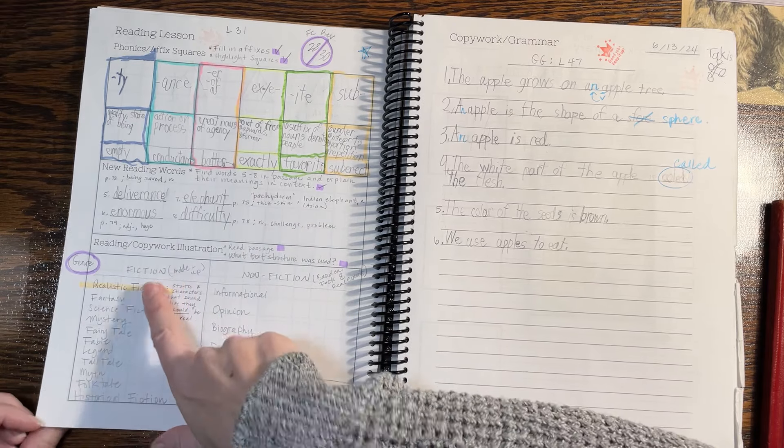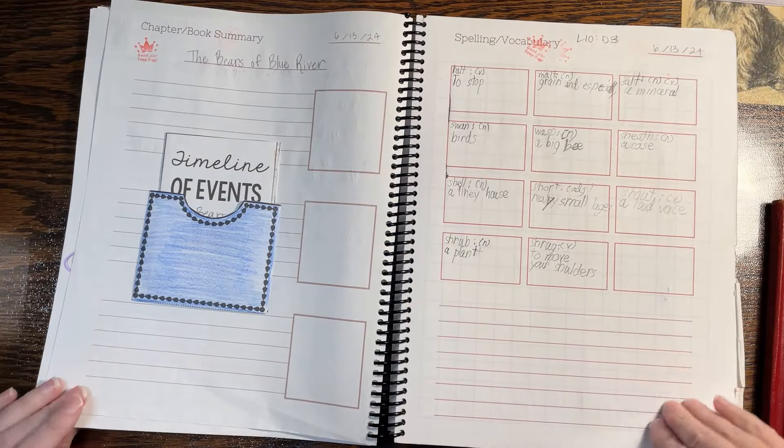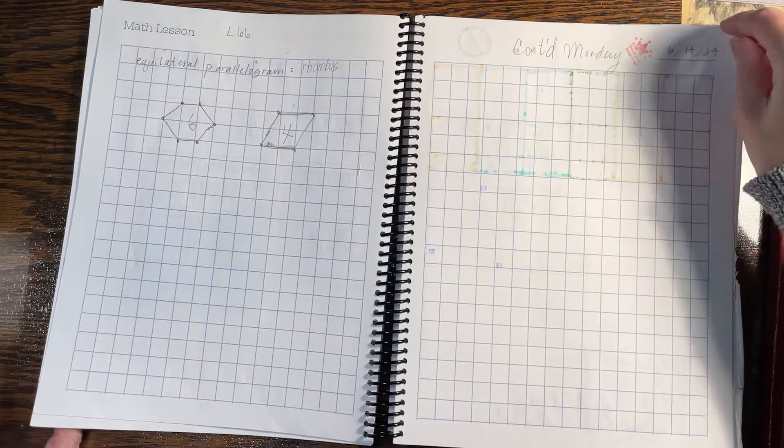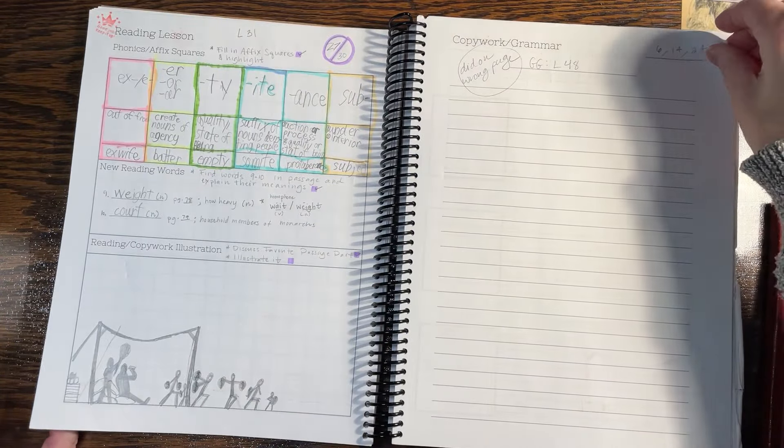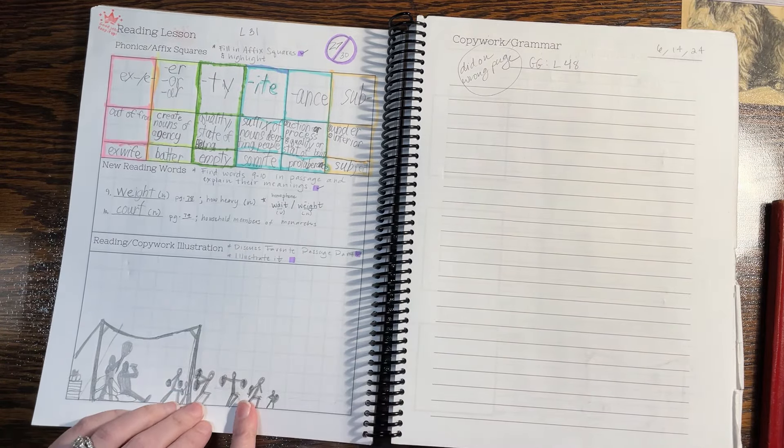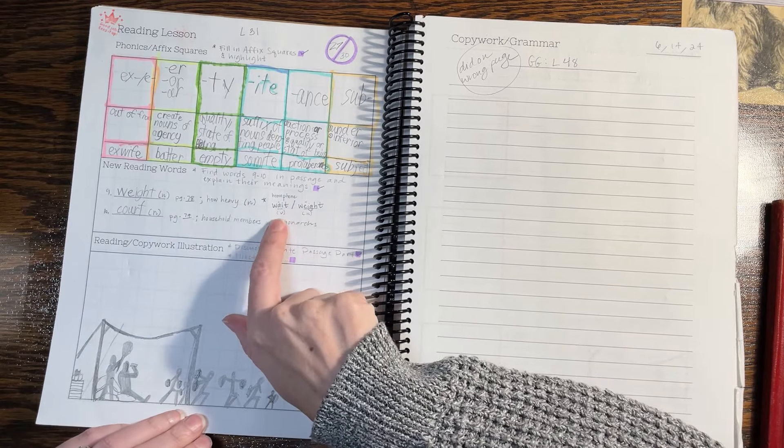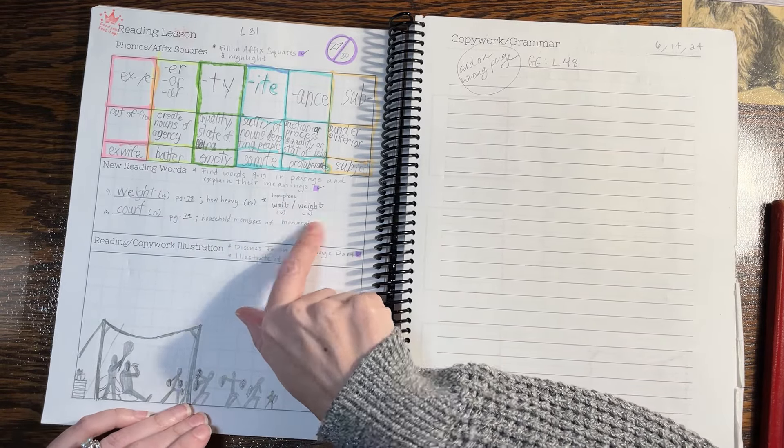So I just came up with our own weekly flow. And I would sometimes adjust this. So again, he did his review, he put in his word parts, his new reading words. I said, find words one through four in the passage and explain their meaning as used. So he wrote down what those ones were. And then he would just orally tell me what they meant and how they were used.